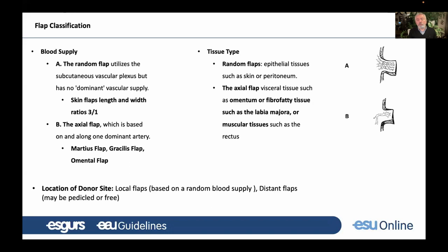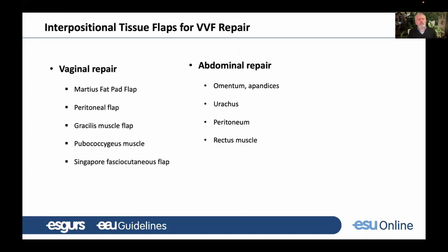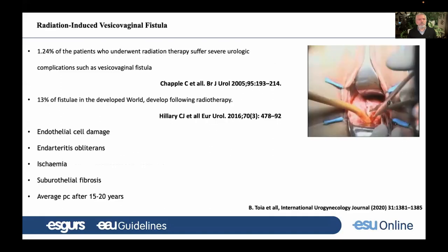According to tissue type, random flaps use epithelial tissues such as skin or peritoneum, while axial flaps use visceral tissues such as omentum, fibrovascular tissue such as labial adipose tissue, or muscular tissues. For donor site location, local flaps are based on random blood supply and distant flaps may be pedicled or free. For vaginal repair, available flaps include Martius fat pad flap, peritoneal flap, gracilis flap, pubococcygeus muscle flap, and Singapore fasciocutaneous flap. For abdominal repair: omentum, appendices epiploicae, urachal flap, peritoneum, and rectus muscle flaps.